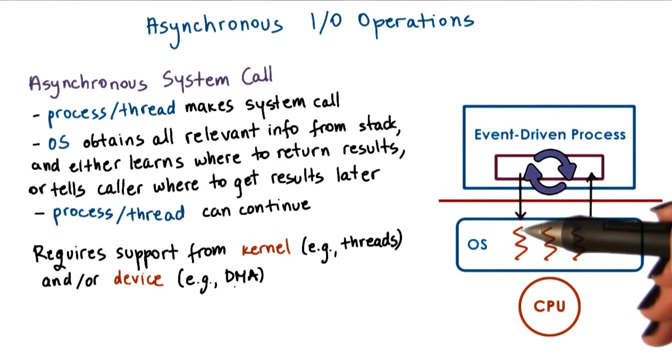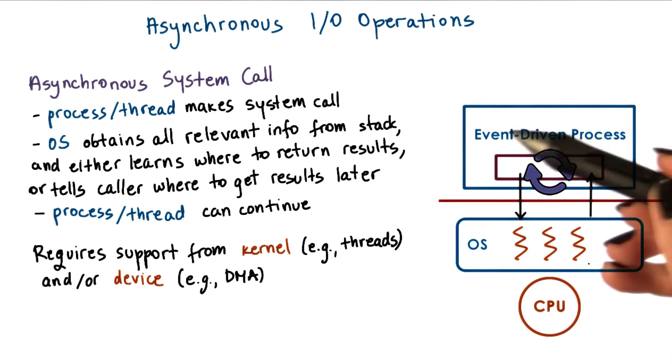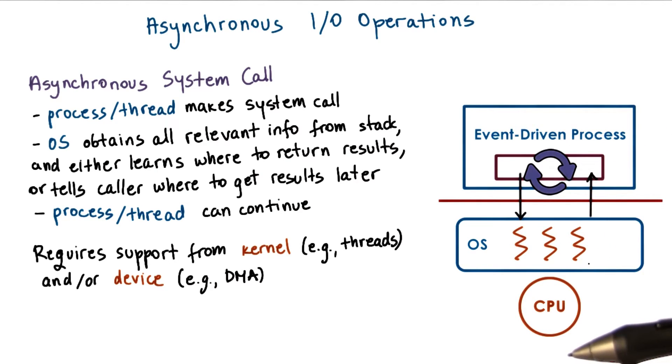So while the caller thread continues execution, another kernel thread does all the necessary work and waiting needed to perform the IO operation, to get the IO data, and then to also make sure that the results become available to the appropriate user level context.